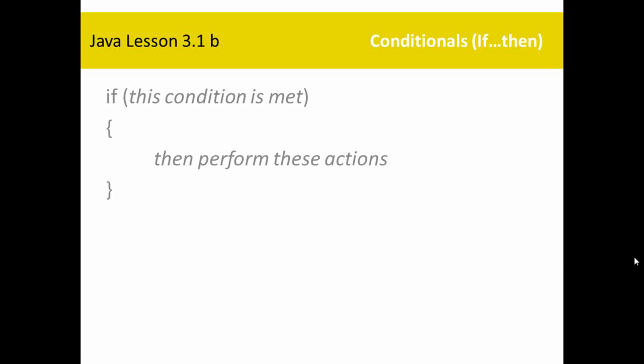This is lesson 3.1b, called branching statements or conditional statements. The first type of conditional statement we're going to do is the if-then. We already talked about it so there's a little bit of redundancy here, but I want to go over this again and add a few things to it.